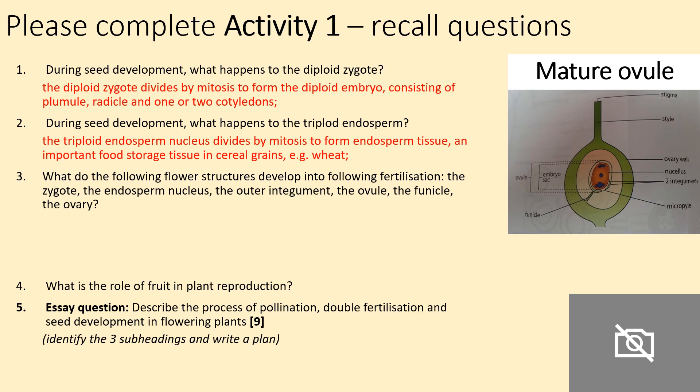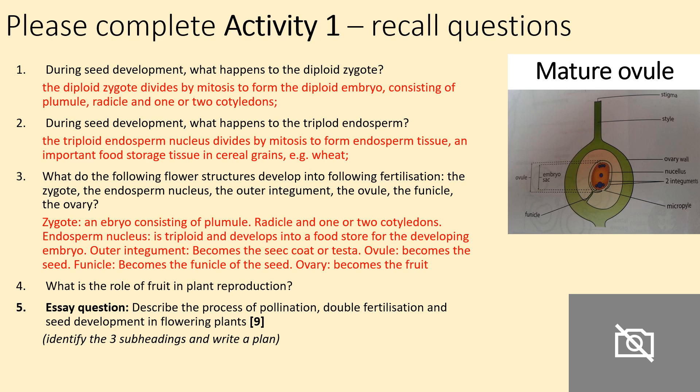What do the following flower structures develop into following fertilisation? Check your notes and see if you've got similar answers. The role of fruit in plant reproduction will come to in a minute. And an essay question: describe the process of pollination, double fertilisation, and seed development in flowering plants.